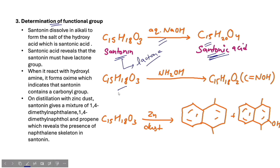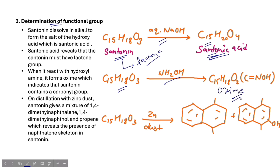For the next reaction, we take Santonin and react it with Hydroxylamine. When Santonin reacts with Hydroxylamine, we get the product of an oxime. This indicates the presence of a carbonyl group in Santonin.